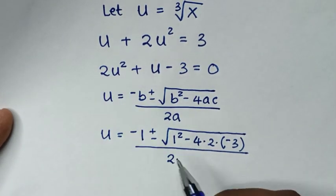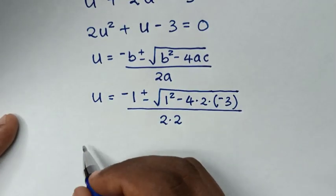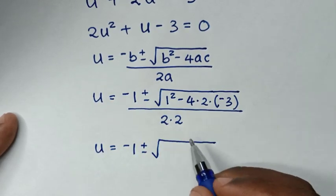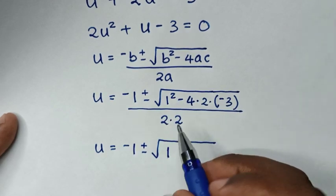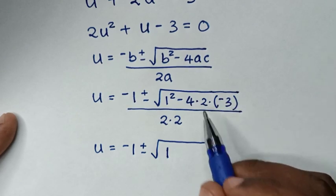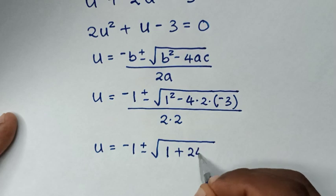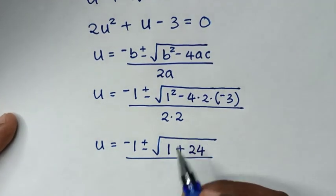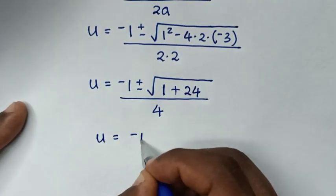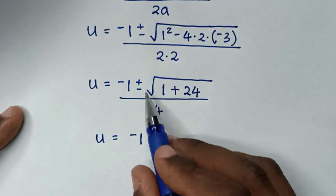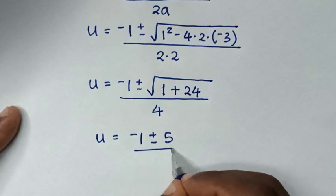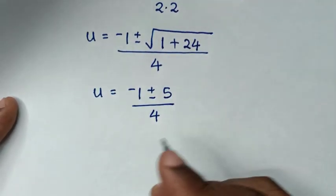So u equals negative 1 plus or minus square root of 1 squared, then minus 4 times negative 3 gives positive 12, and 12 times 2 is positive 24, over 4. This simplifies to negative 1 plus or minus square root of 25, and the square root of 25 is 5, over 4.